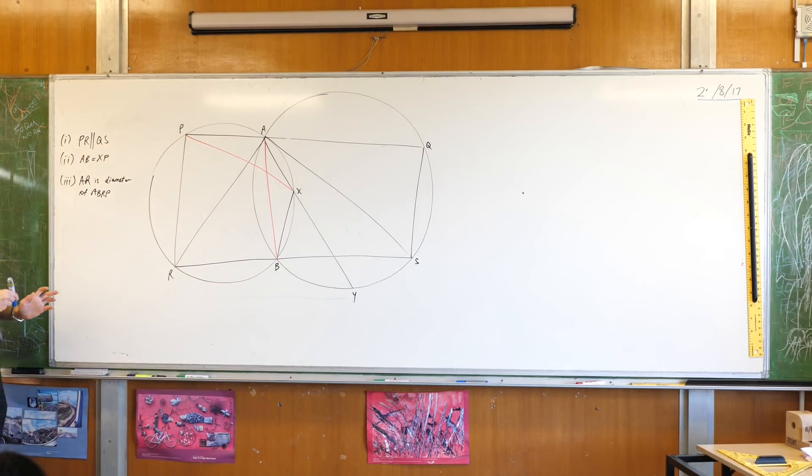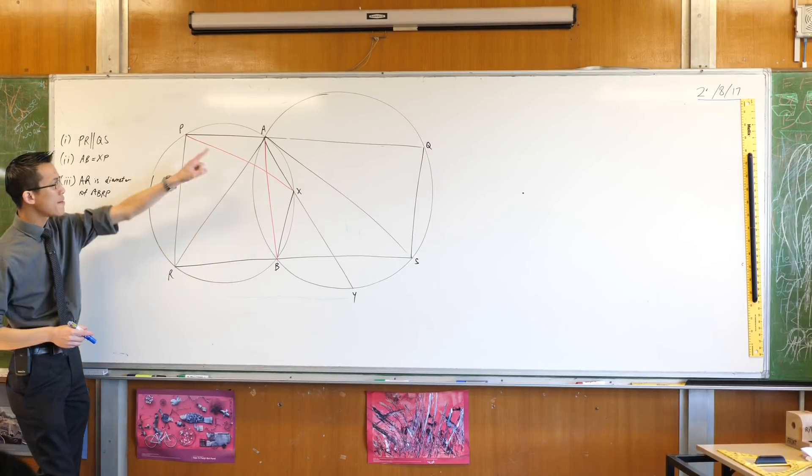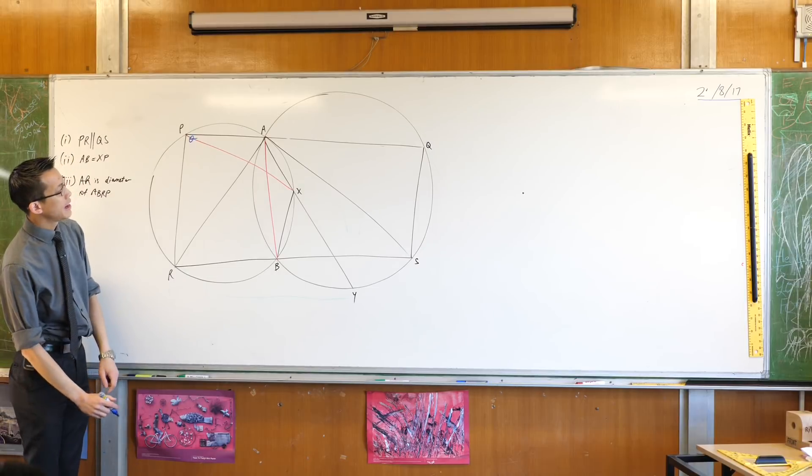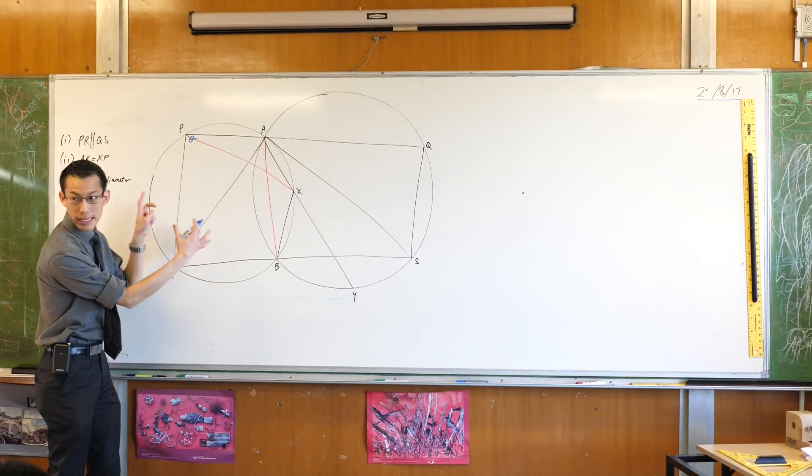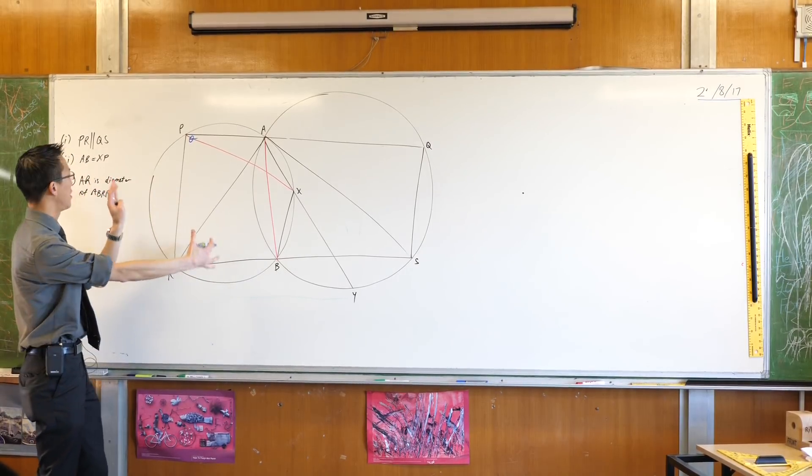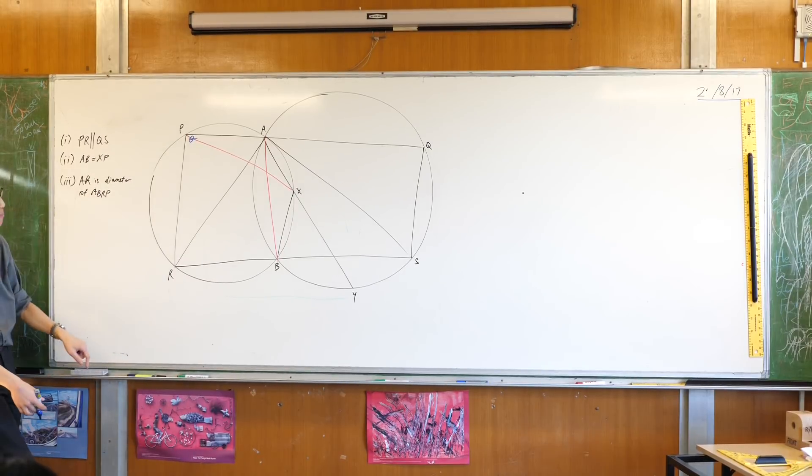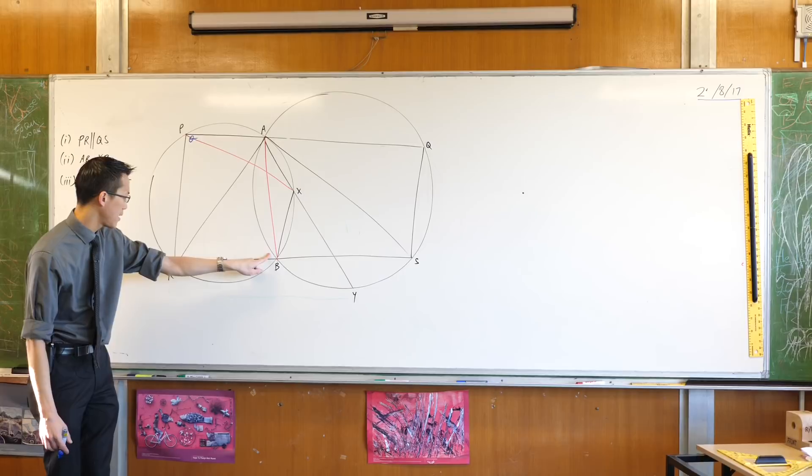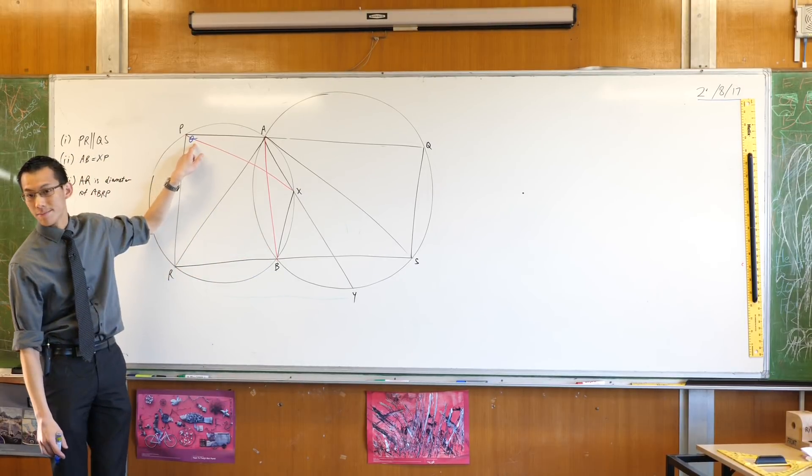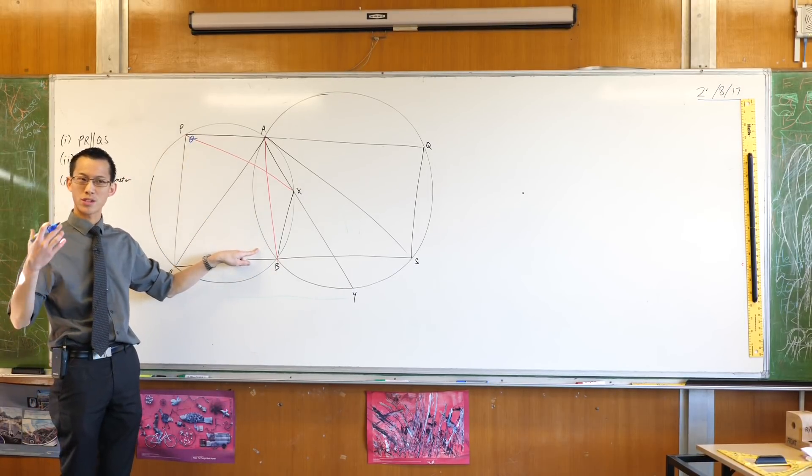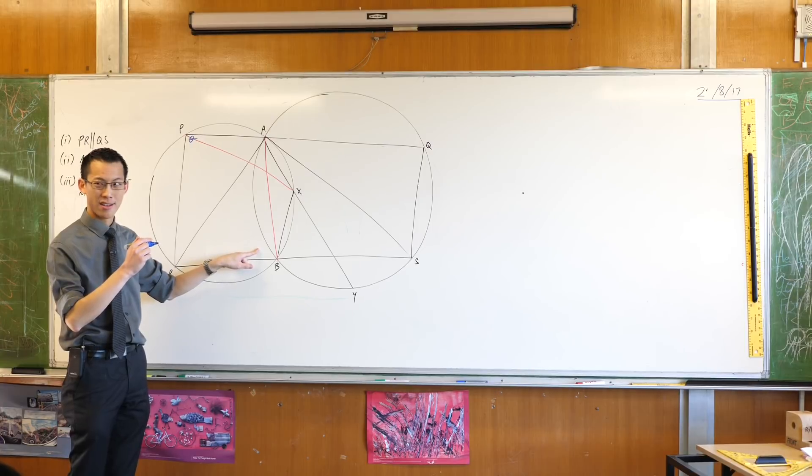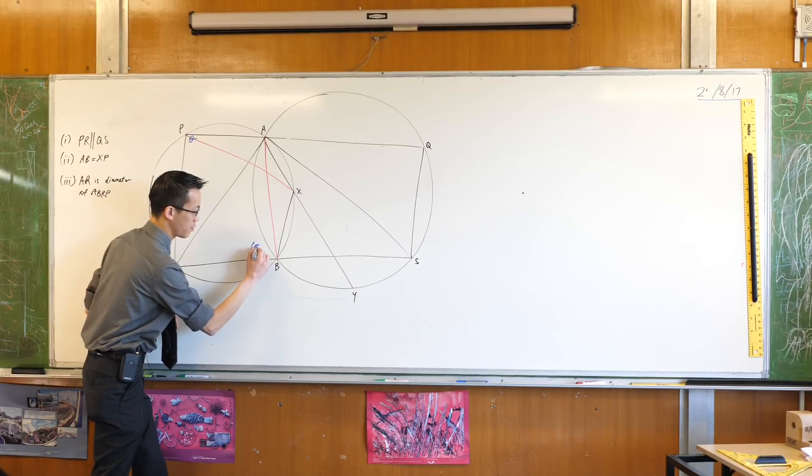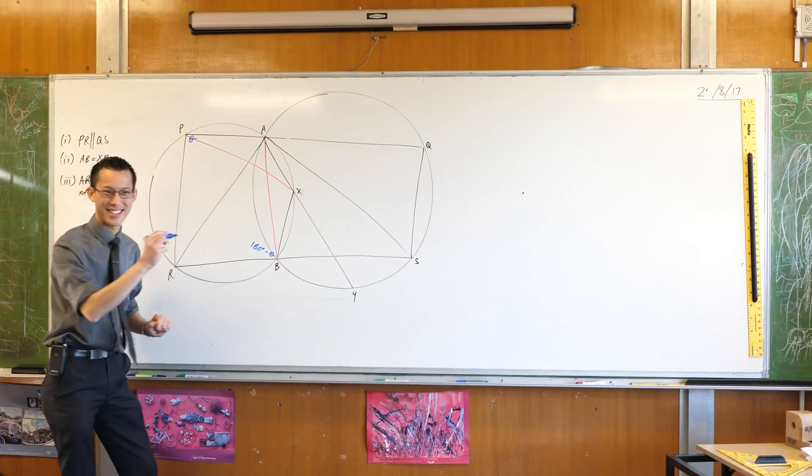So if I recall what we did was we said let's give APR that angle over there. Let's give it a name. Let's call it theta. And if you have a look at the cyclic quad in this circle over here, circle ABRP, you've got this opposite angle ABR. It's opposite theta. So because they're opposite angles in a cyclic quadrilateral, do you remember what's the relationship between them? They're supplementary. Very good. So I'm just going to label that 180 degrees minus theta.